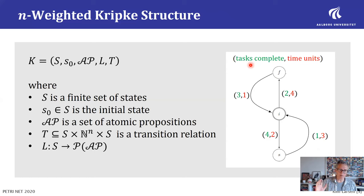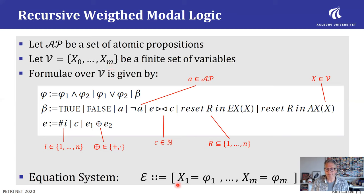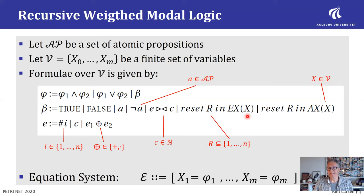For the specification language, we are not directly using a weighted extension of CTL. Rather, we are introducing a very expressive recursive weighted modal logic, very similar to the modal mu-calculus that exceeds CTL in expressive power. We have a finite set of variables, and for each variable a defining formula, forming a simultaneous equation system. These formulas can be conjunctions, disjunctions, or basic formulas — true, false, atomic propositions — or threshold properties comparing a weight expression to a constant, or existential and universal next-step modalities with suitable resets.